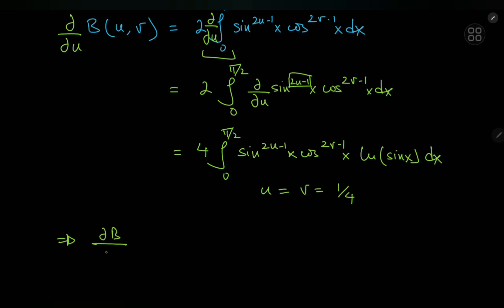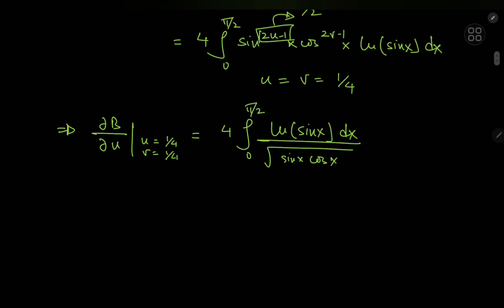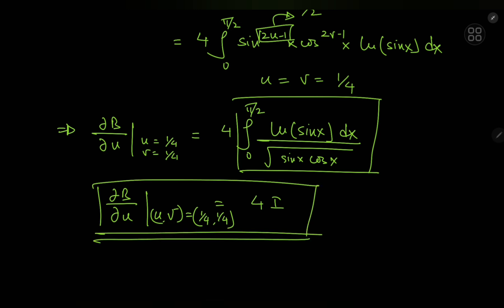So this implies that the partial derivative of the beta function with respect to u at u and v both being a quarter equals 4 times the integral from 0 to pi by 2 of log sin x dx divided by - 2u minus 1 in case you plug in u equal to a quarter would be negative 1 half. So that means we have the square root of sin x times cosine x in the denominator. And this here is exactly 4 times our target integral i. So that means all we have to do is evaluate this derivative at these values of u and v and divide the whole thing by 4 and that'll give us our target integral.